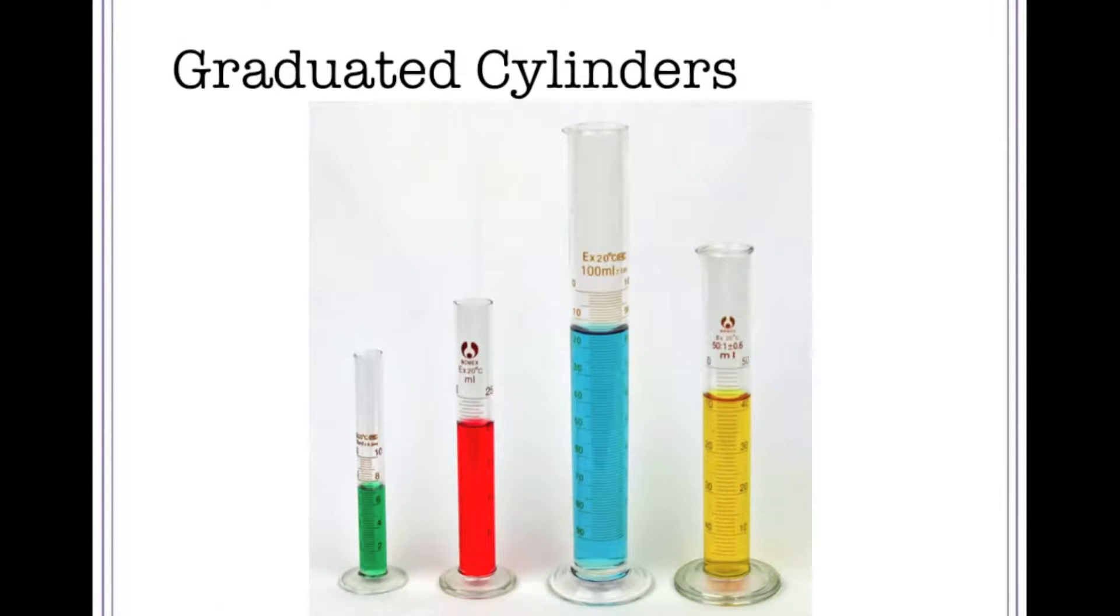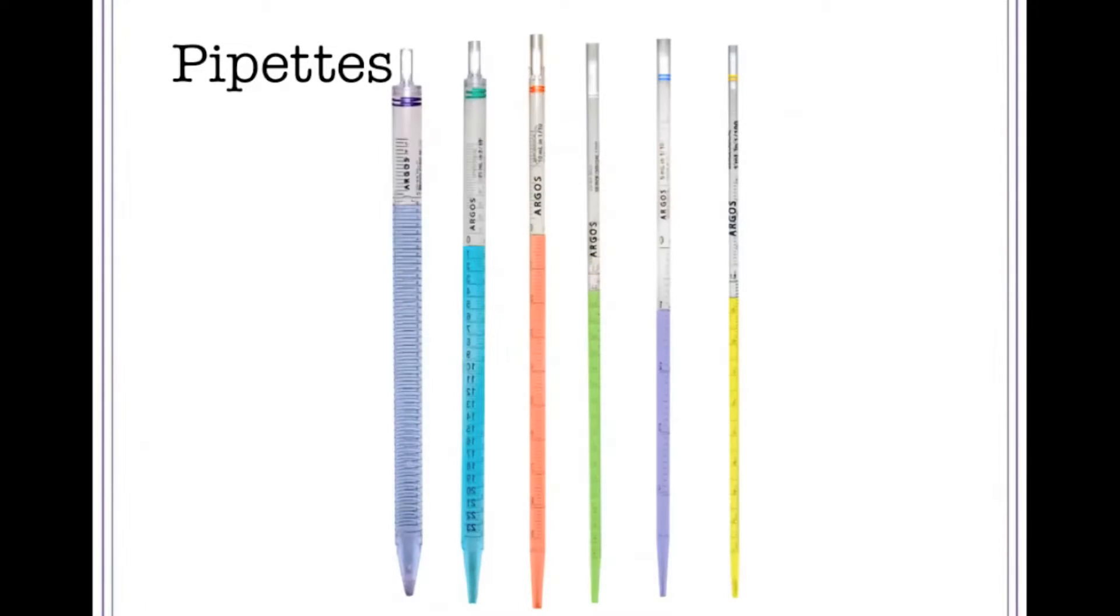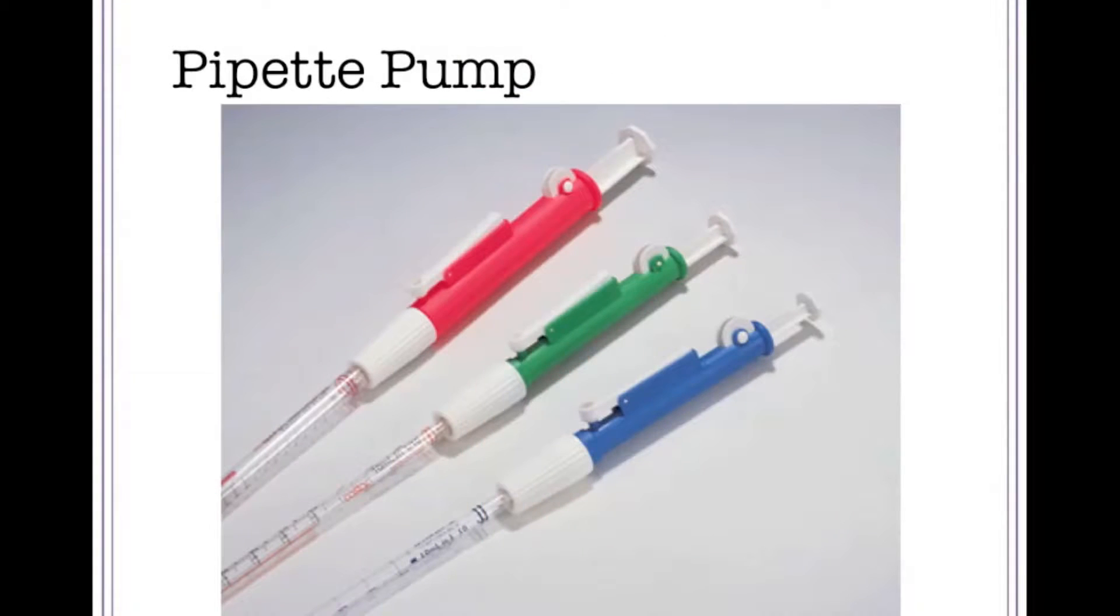A graduated cylinder is used to measure out a specific volume more accurately than a beaker. A pipette is used to deliver a small measured amount of liquid to another vessel. The liquid is drawn up into a pipette using a pipette pump.